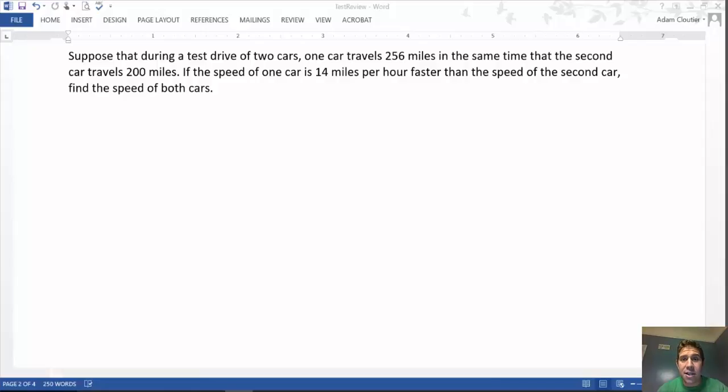and the other traveling 200 miles in the same exact time. That, technically, is the key. So if you read the rest of the problem, it compares nothing else other than their speed, so the same time is the key here.